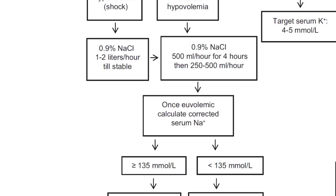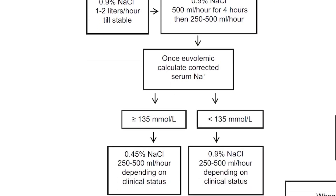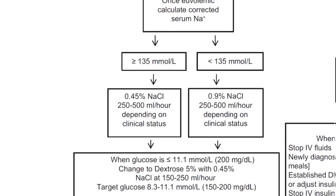Once the patient returns to a euvolemic state, we calculate the corrected serum sodium. If it is greater than 135, 0.45% normal saline is used depending on clinical status; if less than 135, the same normal saline is continued. Once glucose falls below 200 mg/dL, the fluid is changed to dextrose 5%, targeting glucose between 150 to 200 mg/dL.